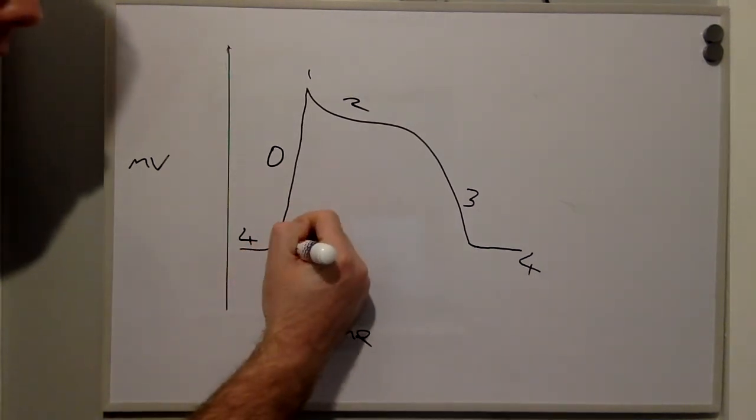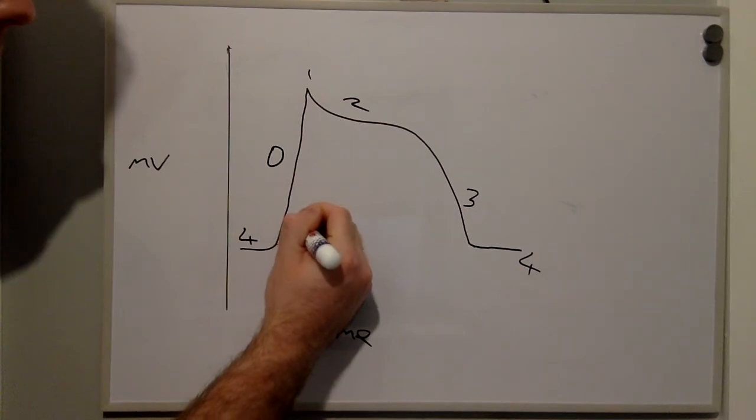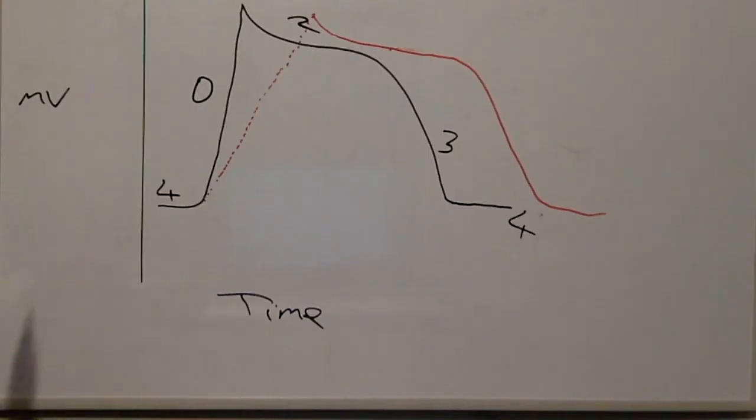The slope will look more like this when a sodium channel blocker is used. An example of a class 1A anti-arrhythmic is procainamide or quinidine.